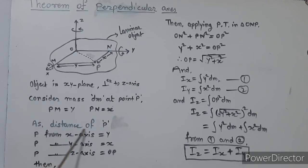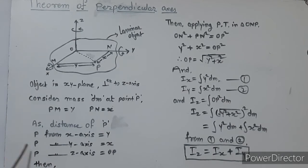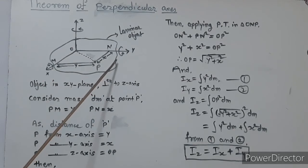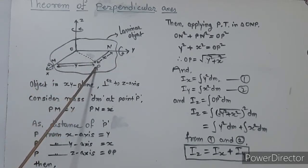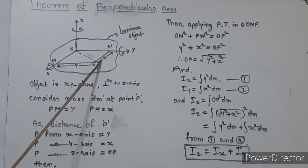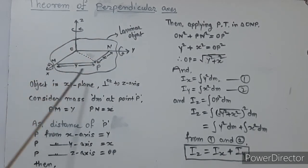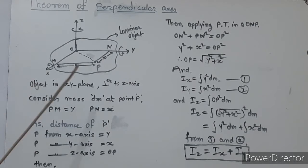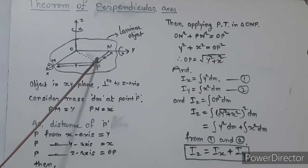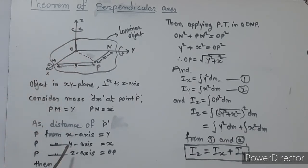Now we need to find the distance of point P from the z-axis. The distance from P to the x-axis is y, the distance from P to the y-axis is x, and the distance from P to the z-axis — that is OP — needs to be found. The mass dm rotates about the z-axis. So the moment of inertia about z requires the value of OP.